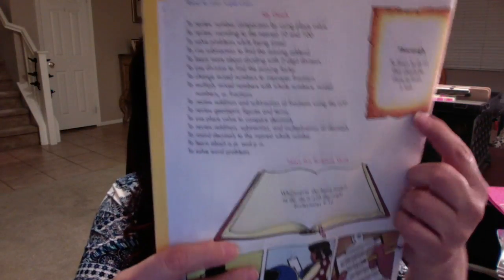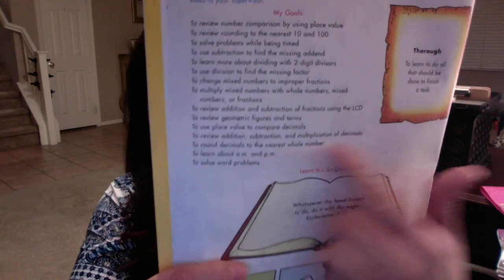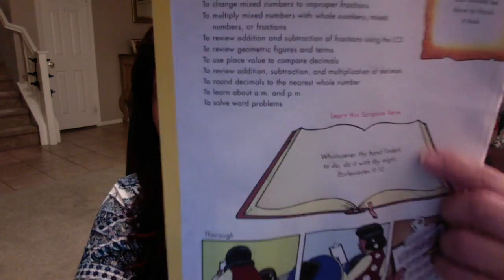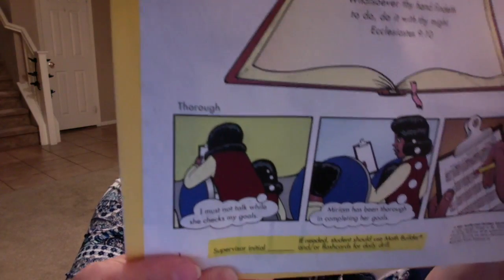ACE curriculum uses booklets — 12 booklets per subject for each grade. This is fifth grade math. At the beginning of each pace you will always find the goals, and then there is a character trait, a Bible verse, and there's always a little comic on the character trait.